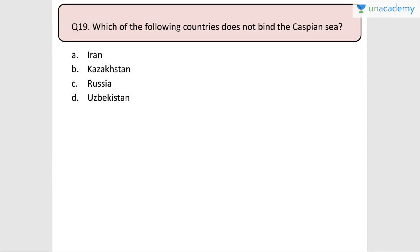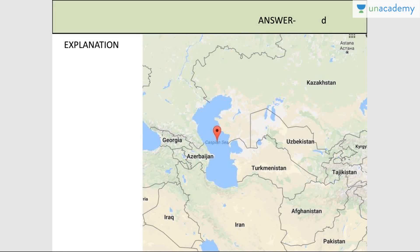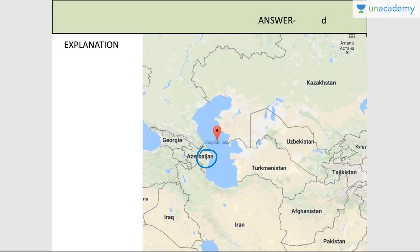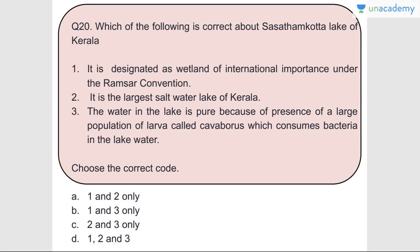Question number nineteen: Which of the following countries does not border the Caspian Sea? Iran, Kazakhstan, and Russia all border the Caspian Sea. Uzbekistan does not border it - the bordering countries are Azerbaijan, Kazakhstan, Russia, Turkmenistan, and Iran. Answer is Uzbekistan.